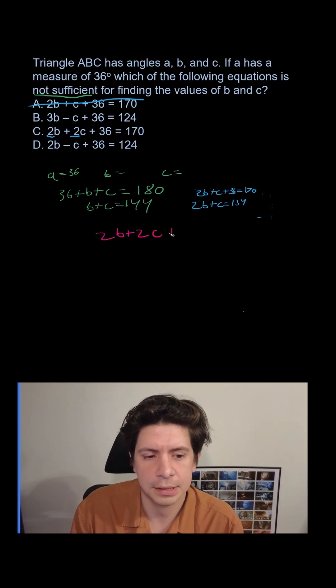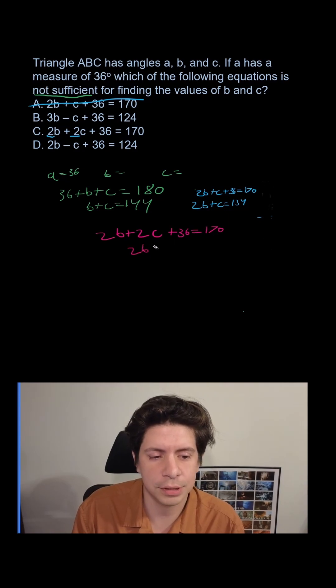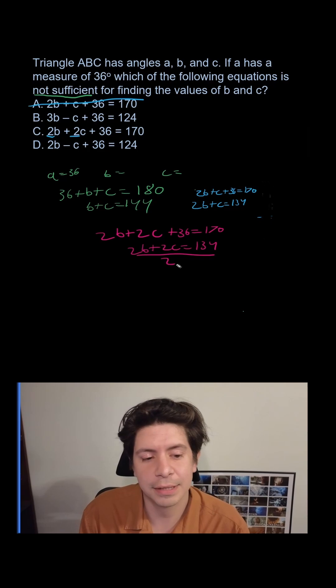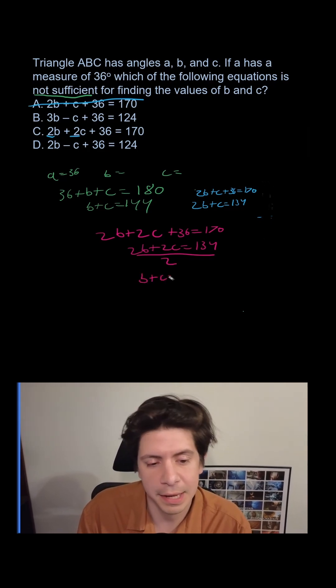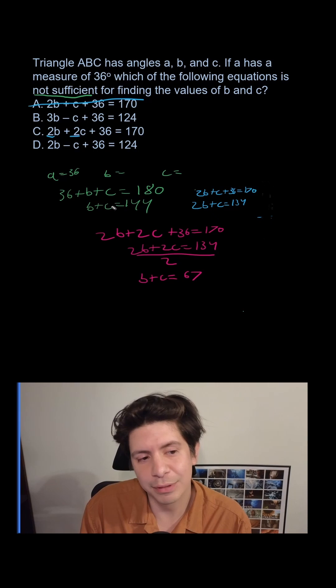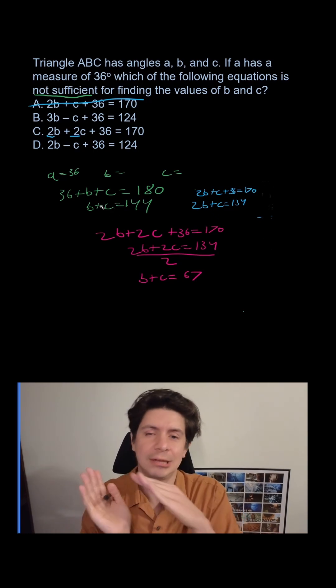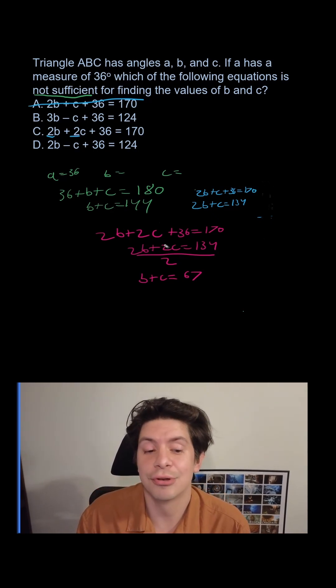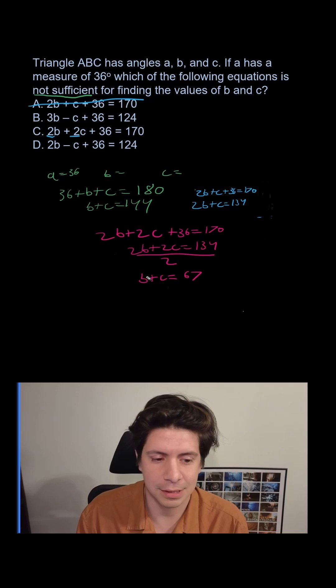2B plus 2C plus 36 equals 170. We subtract by 36, and we get 2B plus 2C equals 134. Divide by 2, and we're going to get B plus C equals 67. Okay, the numbers are different, but the B plus C is the same, so these would be parallel lines if we draft them out. So we would get no solution.